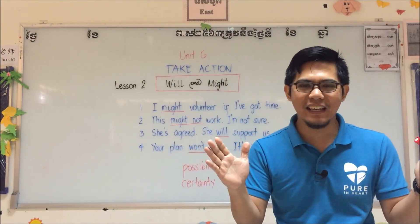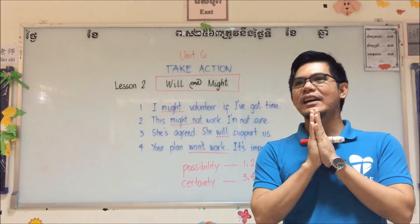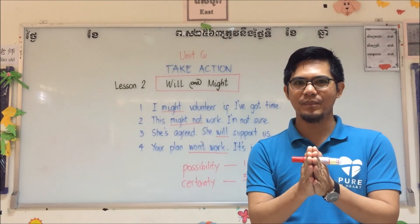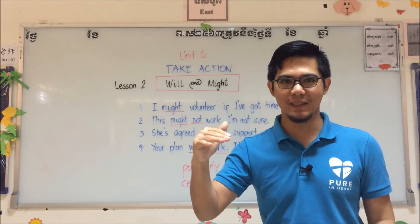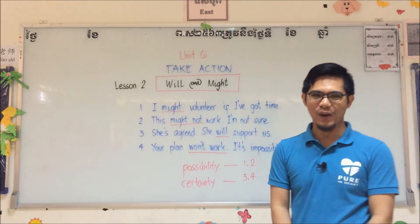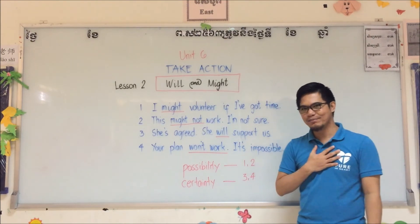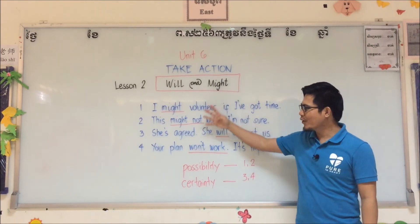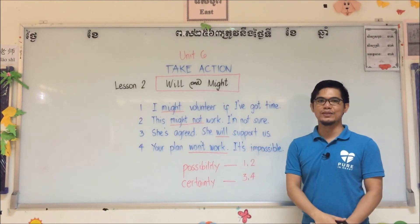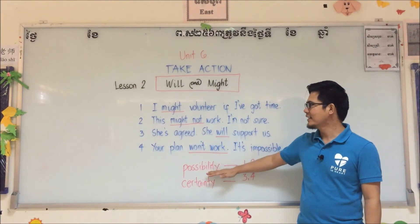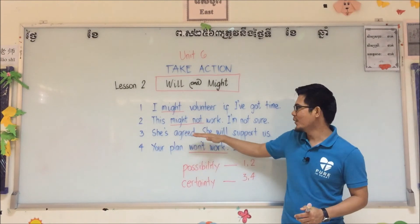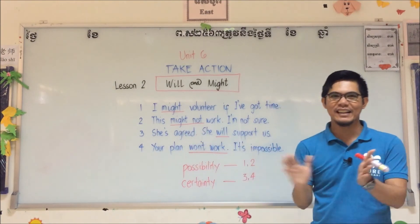For certainty, we use 'will' for affirmative and 'won't' for negative. If we are talking about certainty — that we are 100% convinced, assured — you will use 'will' for affirmative and 'won't' for negative. So we have four examples and two sets of rules: for possibility we use might and might not; for certainty we use will and won't.